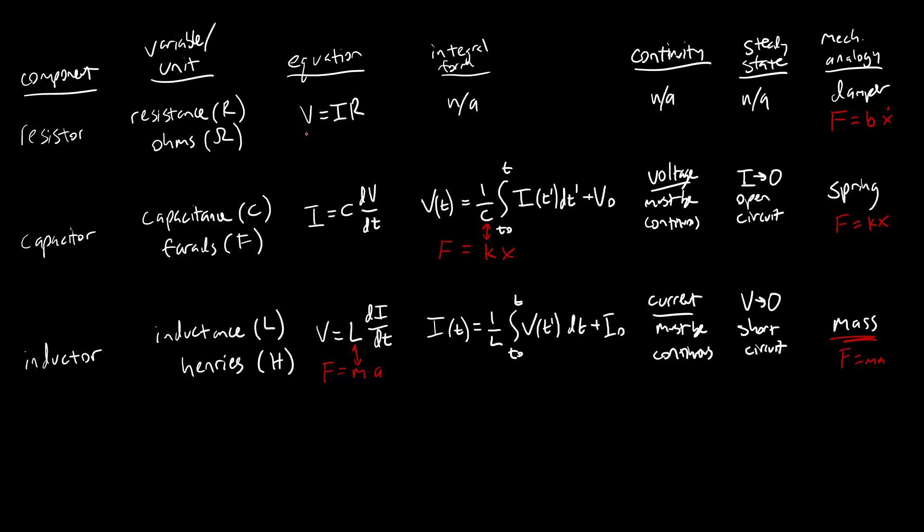And we can see that over here, again, if you're thinking of voltage as force, current as velocity, so there's your x dot and then resistance is like your damping constant b.